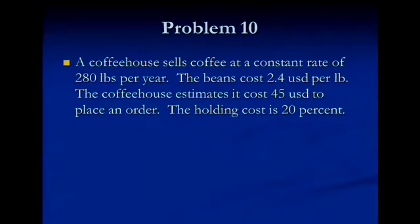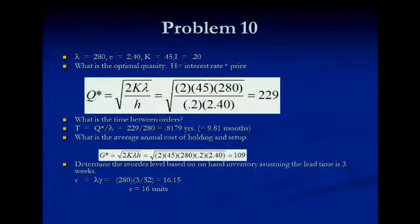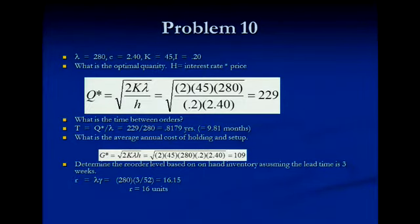This is the coffee bean question. We have 180 pounds of beans; beans cost $2.40 a pound. The coffee house estimates $45 to place an order, and the holding cost is 20%. The trick is to remember that you multiply the price by the interest rate to get the holding cost: 0.2 times 2.40. Find Q*, the optimal order quantity, which is 229. The time between orders is Q divided by lambda — we order 229 each time and use 280 per year, so it's 0.8 years. Then you can compute the average annual holding and setup cost and when to place reorders.